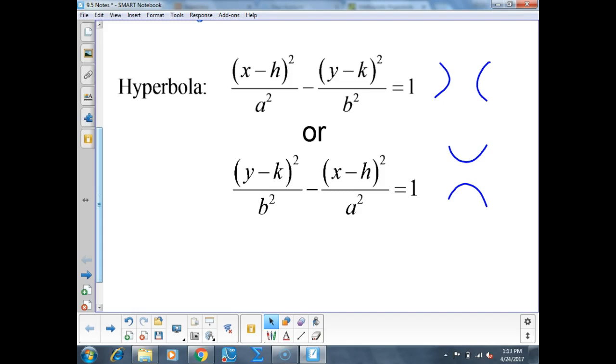It really determines which one it is: up, down, left, right. A left-right hyperbola is x-squared minus y-squared. And up-down is y-squared minus x-squared.